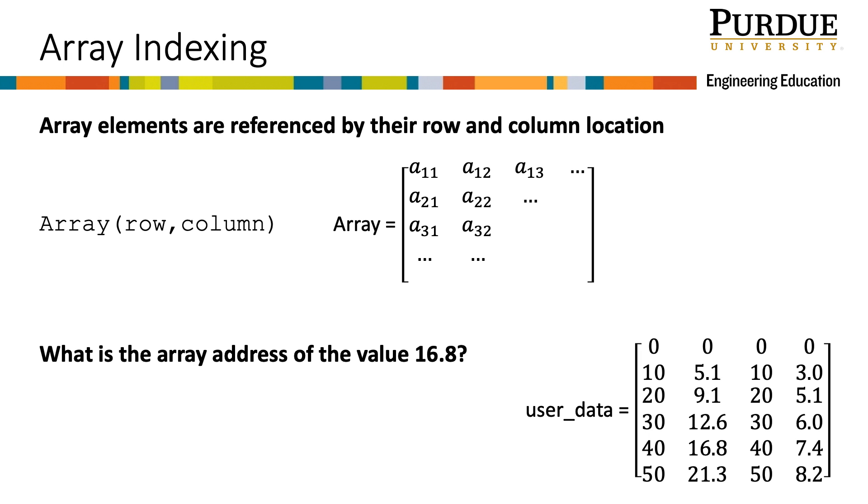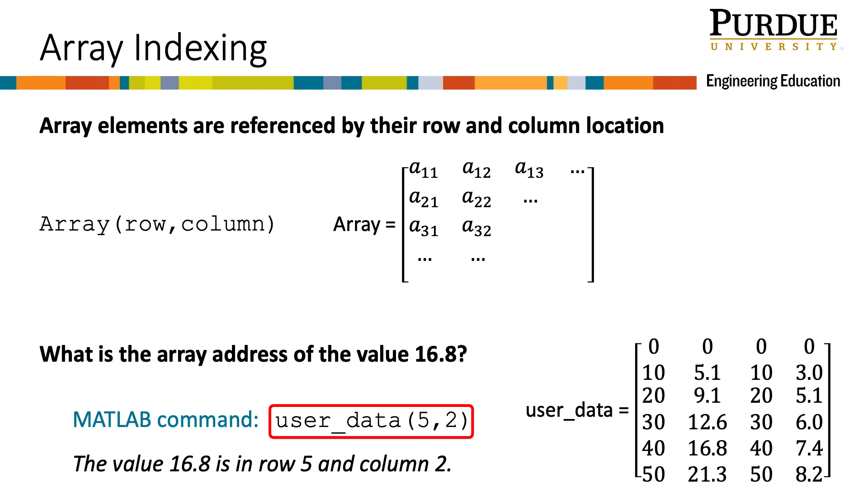Say we have assigned our data for our population to a matrix. How would I reference the value of 16.8? I'd have to use the variable name for the array, user_data, and supply the row number 5 and the column number 2 in parentheses separated by a comma.